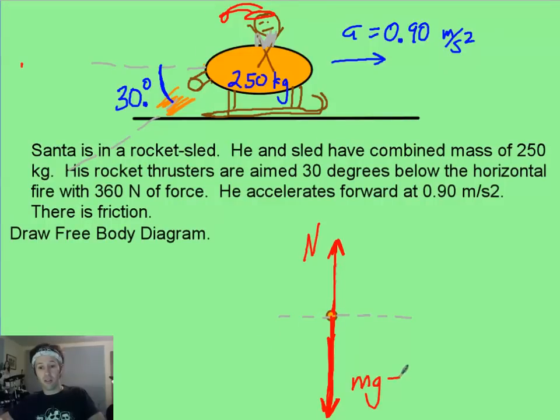And I can keep in mind that this weight is going to be 250 times 10 - it's going to be about 2,500 newtons. Now I've got this rocket thruster force that they're aiming down one way, so the force must be going the opposite way at 30 degrees.